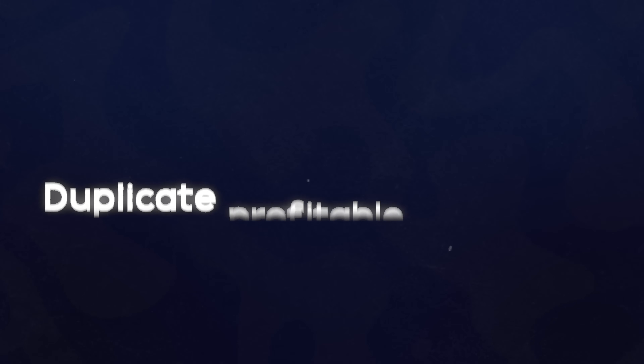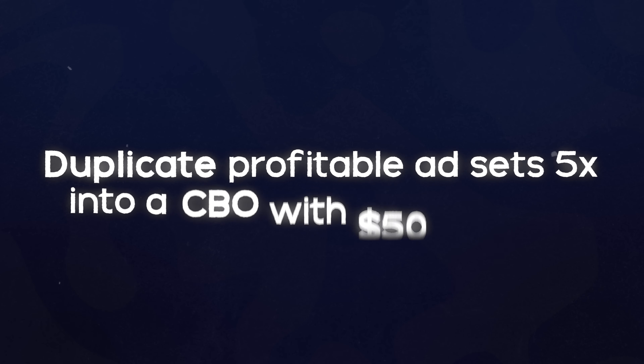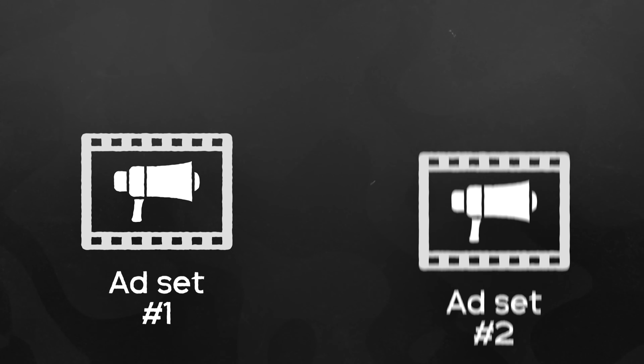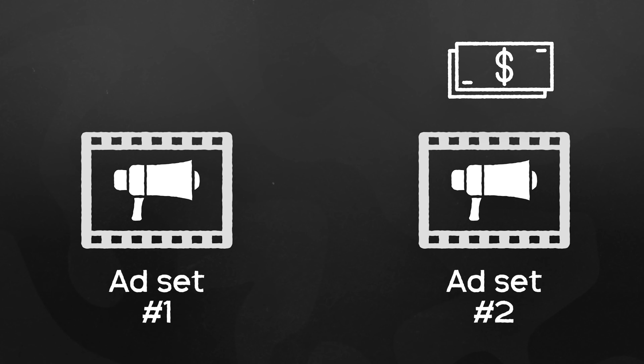At this point, you're going to be duplicating your profitable ad sets five times into a CBO — or campaign budget optimization — campaign with a budget set to $50 per day. This basically means that TikTok will distribute that budget across any of the ad sets that it deems the most worthy to receive the budget. In other words, it'll automatically allocate the money to what's probably going to bring you the best results.